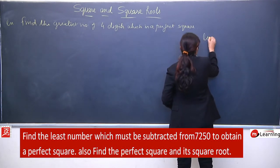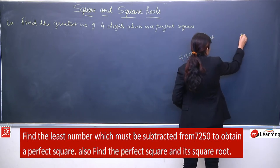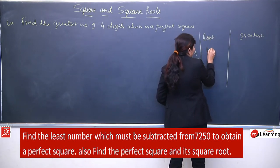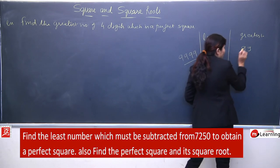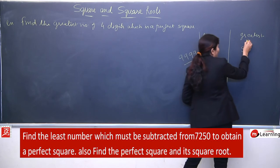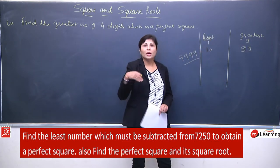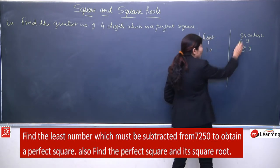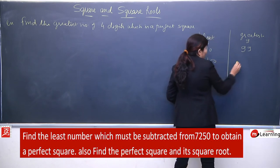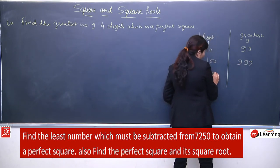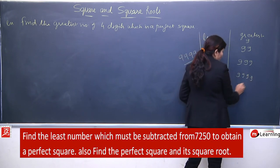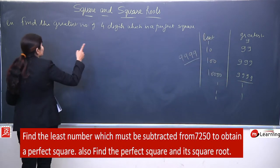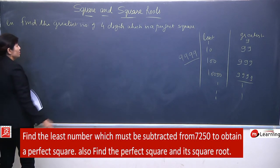Least aur greatest numbers: least two-digit = 10, greatest two-digit = 99. One digit: least = 1, greatest = 9 (kyunki 9 ke baad 10 aa jata hai, 2-digit ban jata). Similarly 3-digit, 4-digit, aur aage ke numbers ke liye bhi yahi pattern. Hamara question 4-digit ka hai toh hum 9999 lenge. Greatest 4-digit number is 9999.